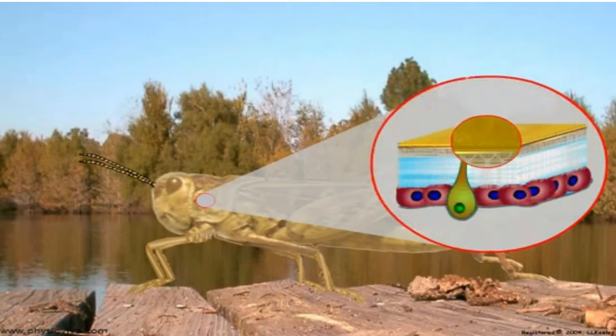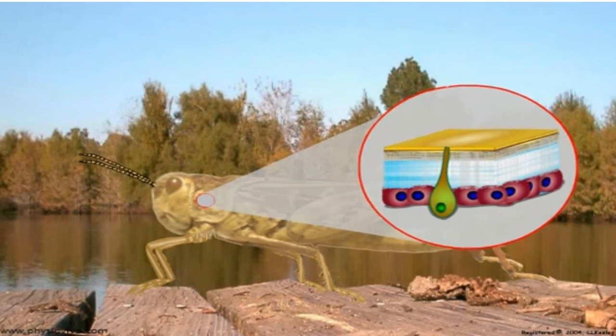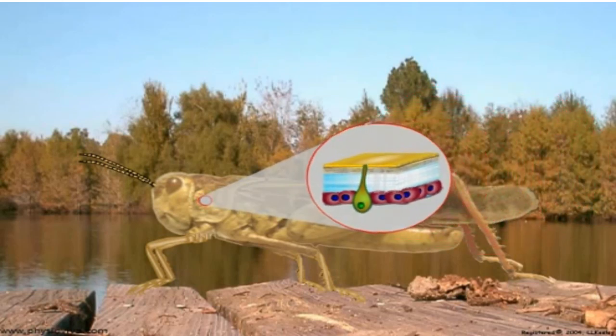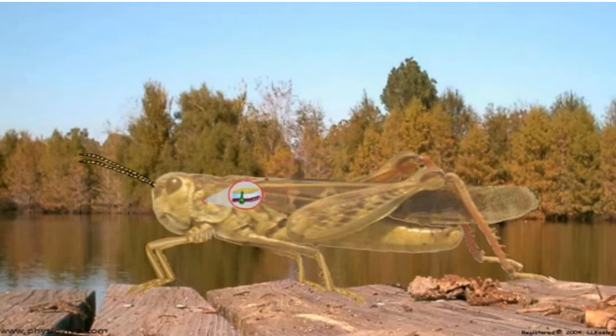The insect exoskeleton is an effective integument, but like a suit of armor, it restricts the size that insects can attain, and its rigidity prevents growth except by replacing the existing exoskeleton with a new, larger one by molting. Let us see how an insect is able to molt to remove an exoskeleton that has become too small and replace it with a new one that allows for growth.